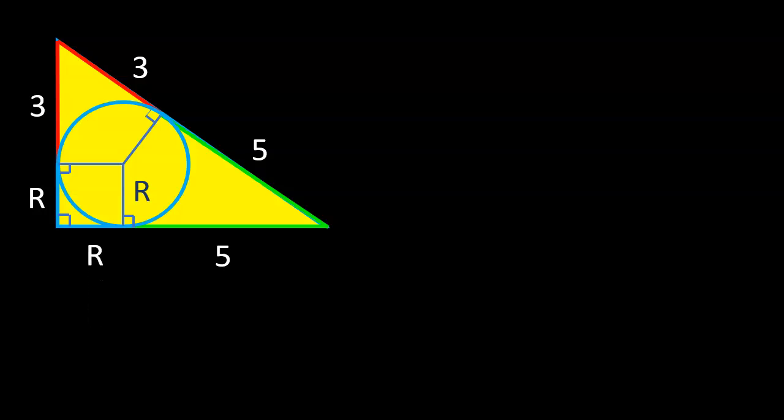Now let's compute the area of the triangle. Total area of the triangle equals area of the square, which is r times r or r², plus the area of this triangle, which is 1/2 base times height or 1/2(5r). This triangle is identical, so plus 1/2(5r).